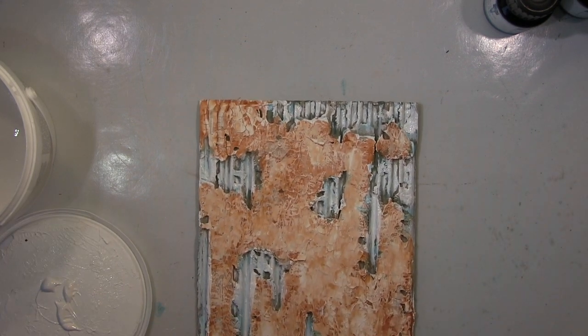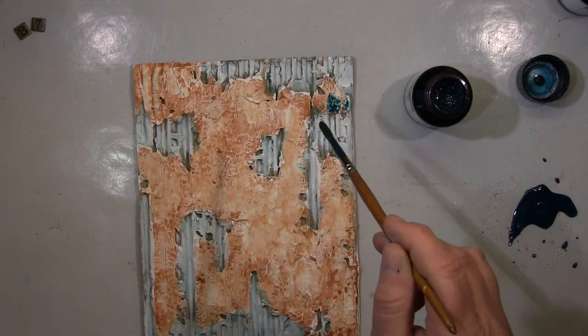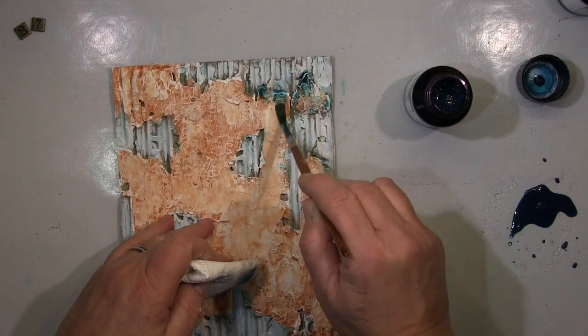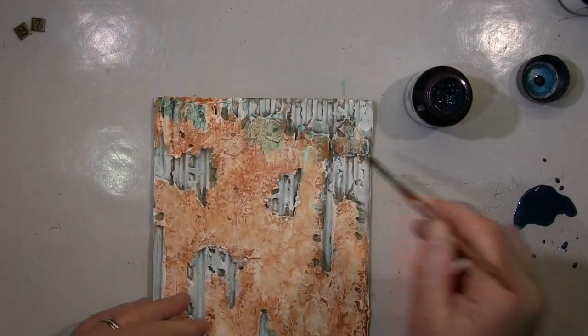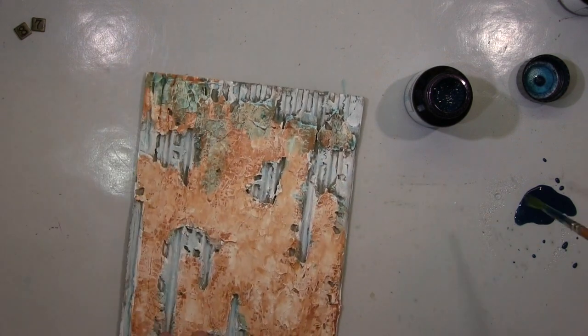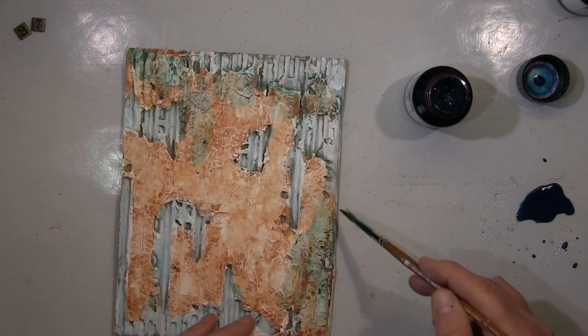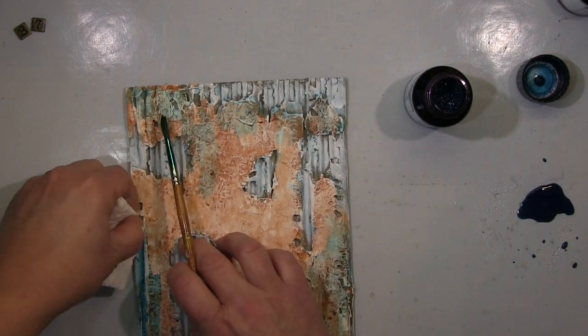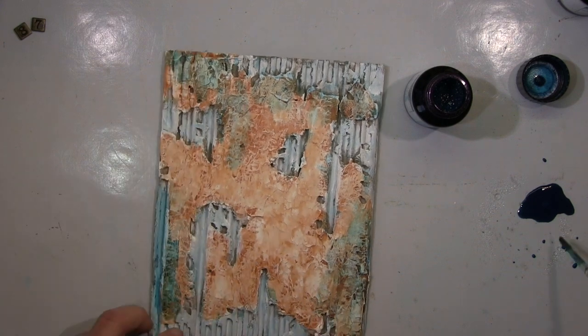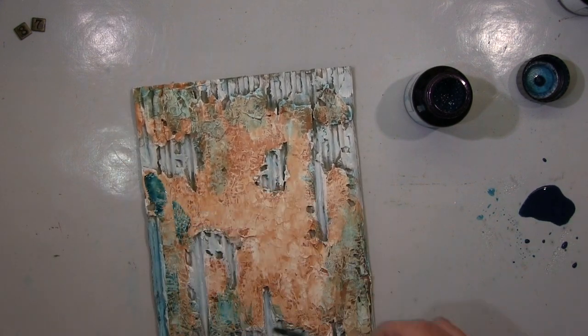Sonst habe ich dann mit dem Blau, also erstmal das Braun draufgepackt und schön eingearbeitet in die Risse, und dann ein bisschen von der Oberfläche wieder mit einem feuchten Tuch abgenommen, natürlich nicht alles, wollte ich nicht. Das Blau im Hintergrund habe ich gedacht, sehe gut aus, sah aber kacke aus, gefiel mir nicht. Also habe ich dann wieder das Gesso erstmal draufgemacht in weiß.